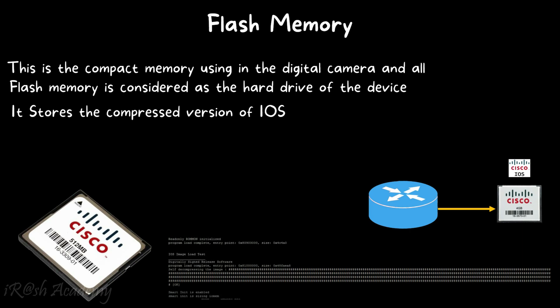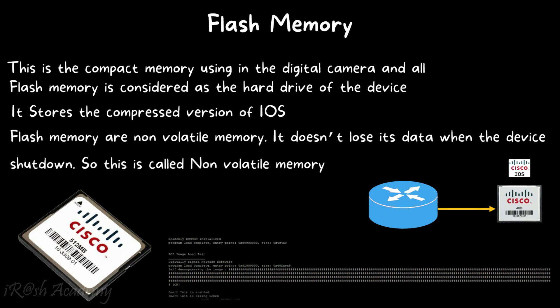As shown on screen, this is the booting process of a Cisco device — a series of hash symbols represents the process of decompressing the IOS from flash memory to dynamic memory. After decompression, all configuration is loaded from dynamic memory. Flash memory is non-volatile memory, meaning it does not lose its data when the device is shut down — it is not dependent on the power status of the device.